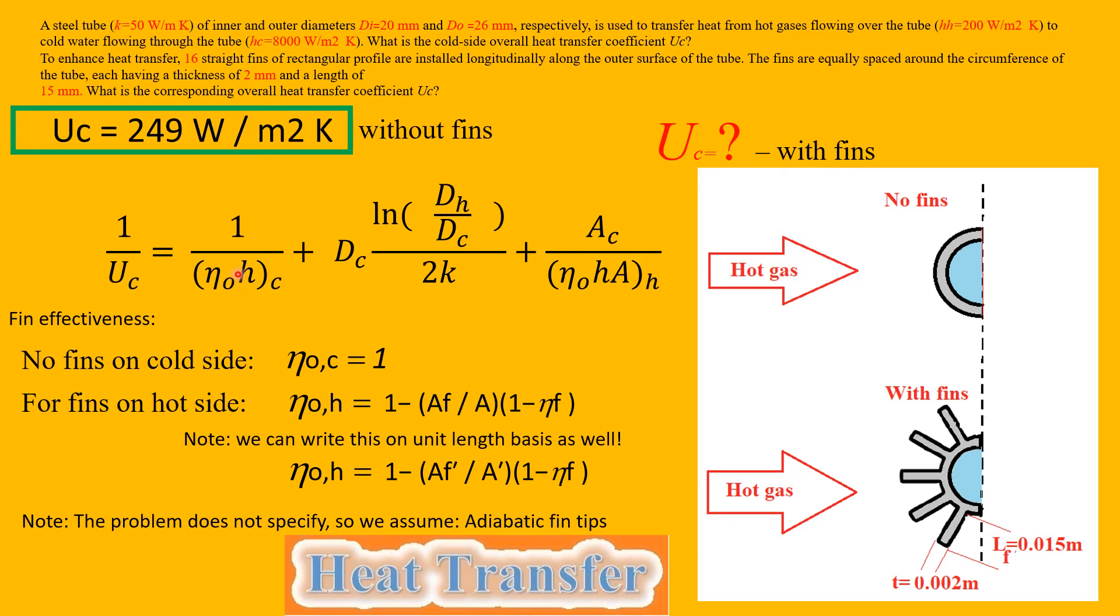Let's take a look. This formula is already in the form where I canceled out the fouling factors because we know we don't have them. I also have the radial system already plugged in. Now the effectiveness on the cold side for the fin will be still one because we did not put any fins on the cold side, but on the hot side we have fins now therefore we will have to use the appropriate formula for it.